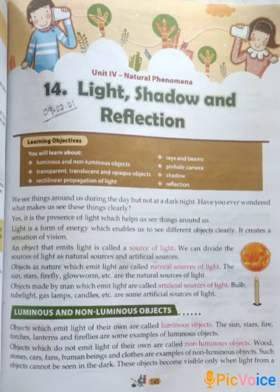Luminous and non-luminous objects. Objects which emit light of their own are called luminous objects. For example, sun, stars, fire, torches, lanterns, and fireflies.